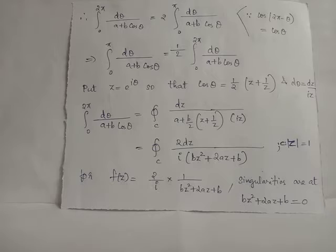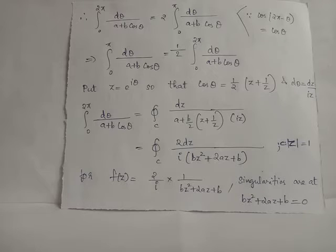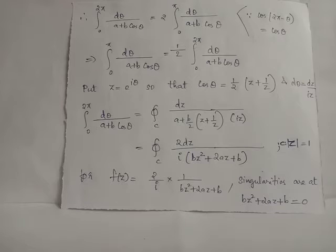Hence the given integral ∫₀^π dθ/(a + b·cosθ) can now be written as (1/2)·∫₀^{2π} dθ/(a + b·cosθ). We have now obtained the integral of the form ∫₀^{2π} f(cosθ, sinθ) dθ.